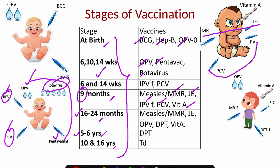The next stage is 16 to 24 months. There we need to give OPV booster and DPT booster. Then as per the schedule, MMR and JE second dose will also be given here.